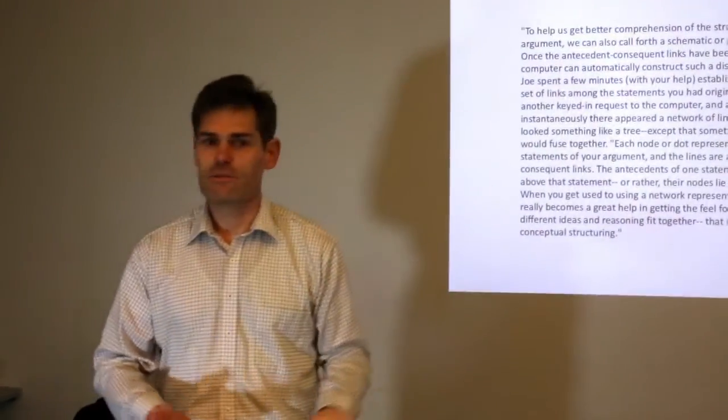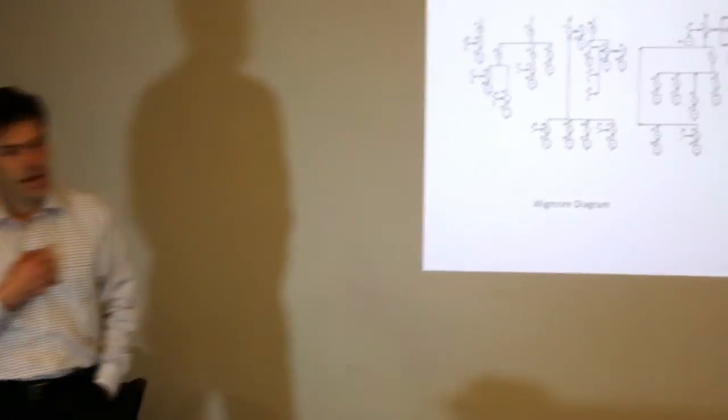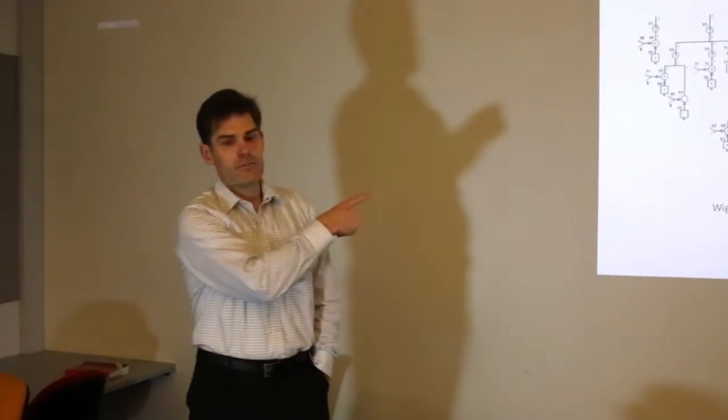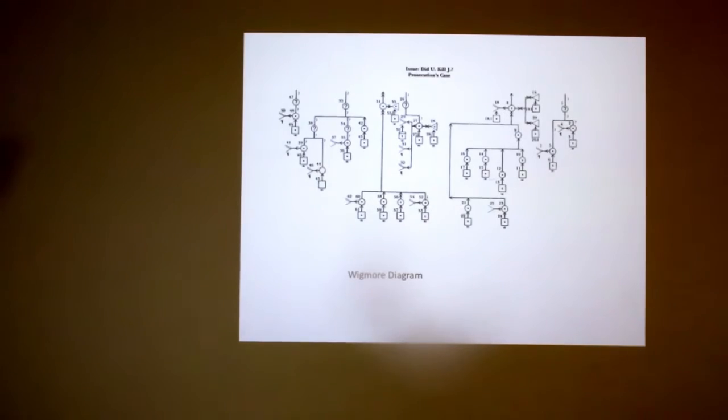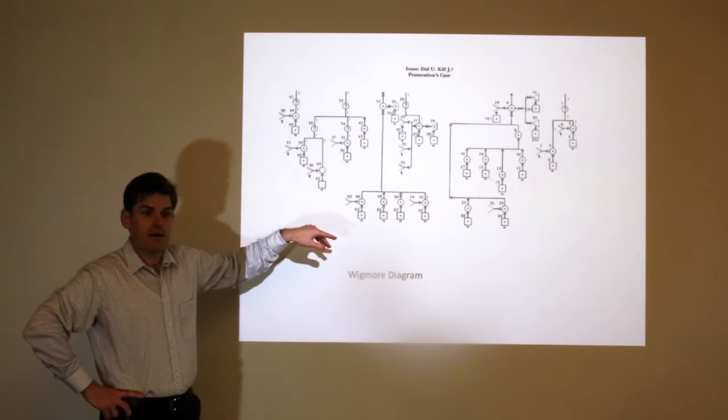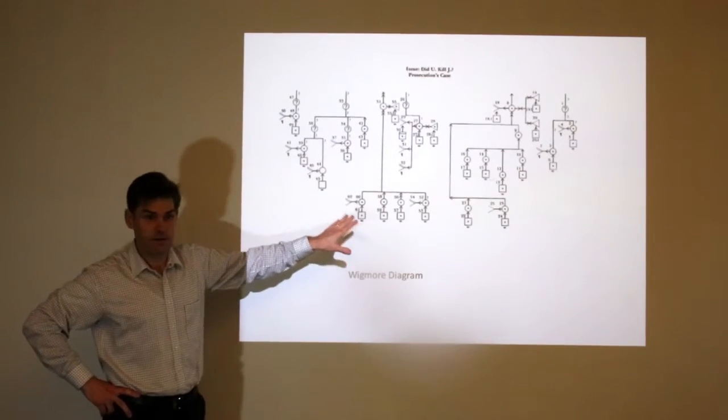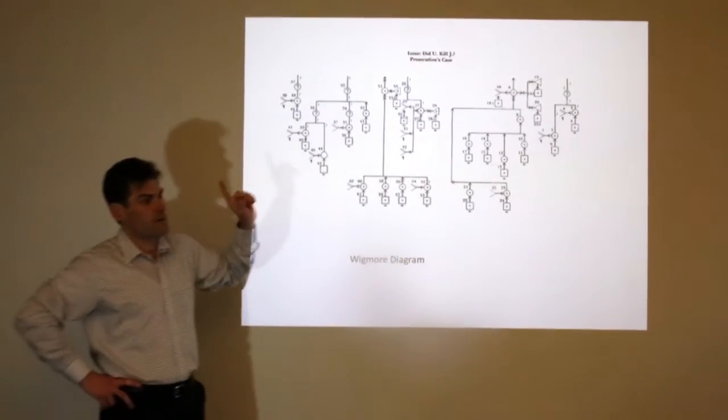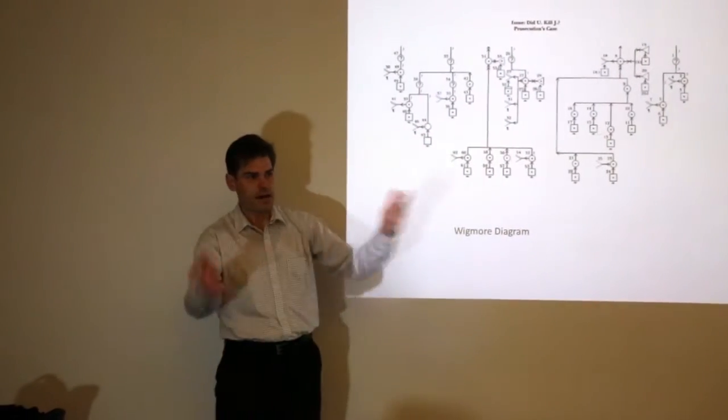I'll just give you a glimpse of that. To help us get better comprehension of the structure of an argument, we can also call forth a schematic or graphical display. Once the antecedent-consequent links have been established, the computer can automatically construct such a display for us.